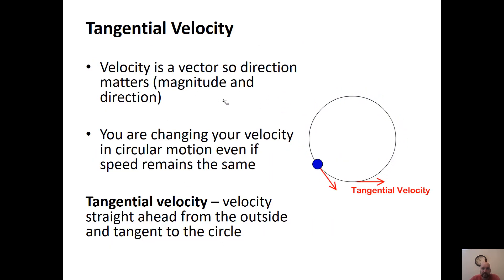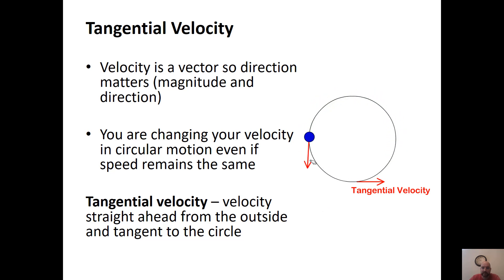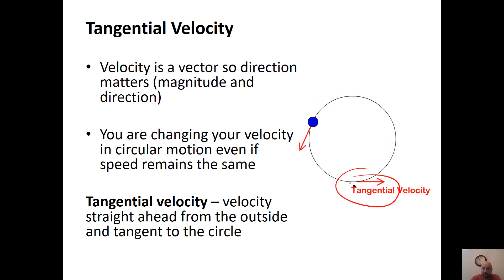When you hear tangential velocity — in physics, velocity is a vector. It has a magnitude, so many meters per second, and it also has a direction. That direction is always changing, so the object is always changing its velocity. What we do is take one point and pretend that if it were allowed to go out from that point, it would go straight ahead tangent to the circle.